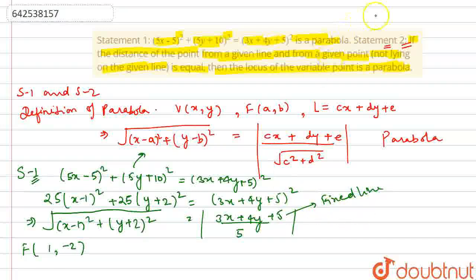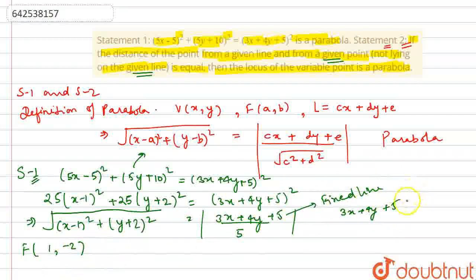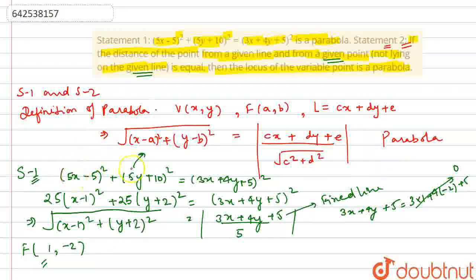According to Statement 2, the fixed point must not lie on the given line. The fixed point is (1, −2). Checking on the line 3x + 4y + 5 = 0: 3(1) + 4(−2) + 5 = 3 − 8 + 5 = 0. Since the result is 0, the point (1, −2) lies on the given line, which violates the required condition. Therefore, this locus is not a parabola, and Statement 1 is wrong. Statement 2 is correct as it is the definition of a parabola.